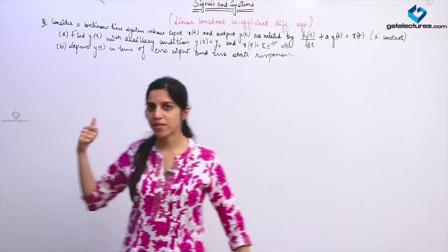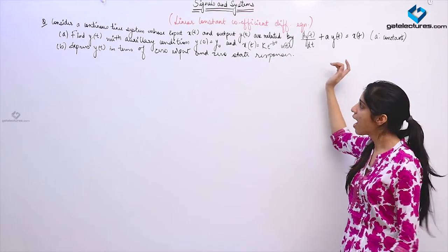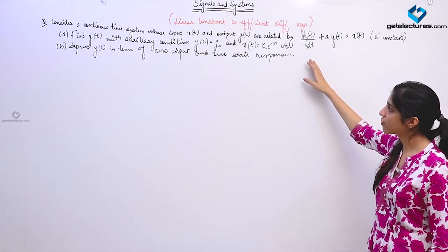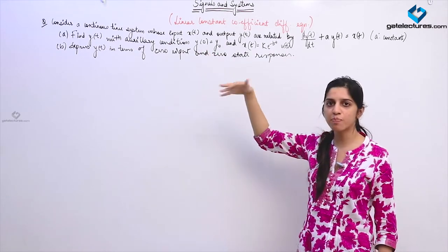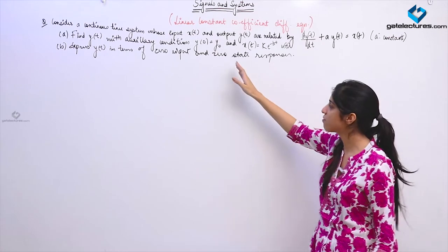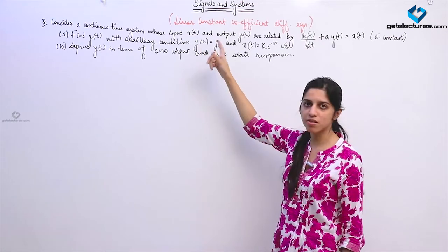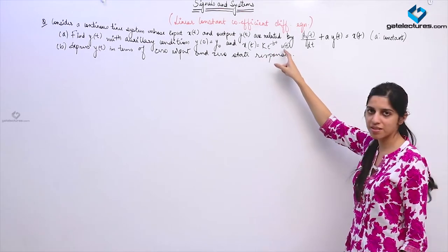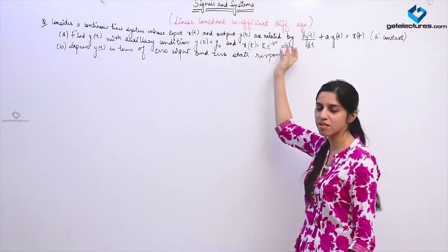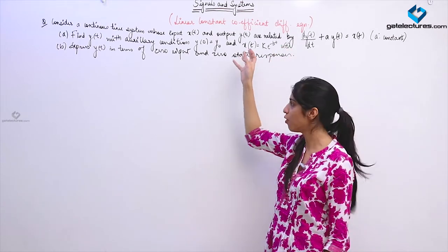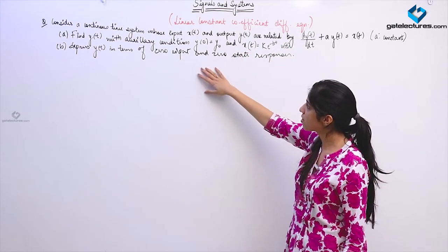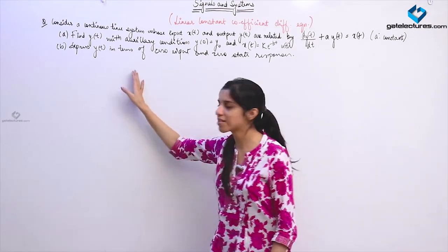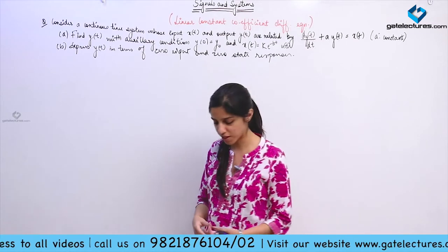In this question we are given a differential equation defining a system, and this equation relates the input and the output. They have given an auxiliary condition — auxiliary condition means the previous state of the system — which is at t=0, y(0) = y_naught. The output starts from when the input contains u(t), which means this input is applied after t=0. They are asking you to find y(t), the response of the system, and then express it in terms of zero-input response and zero-state response.